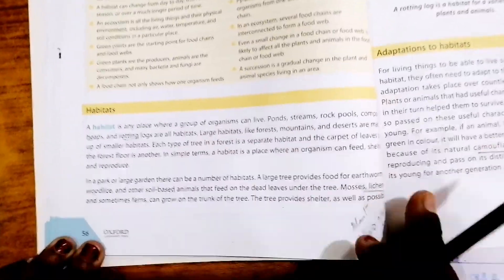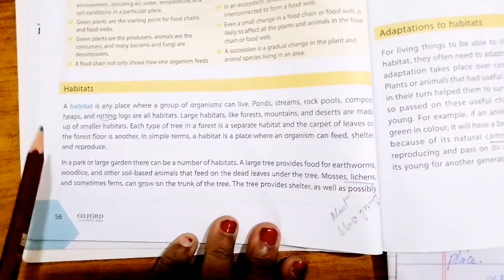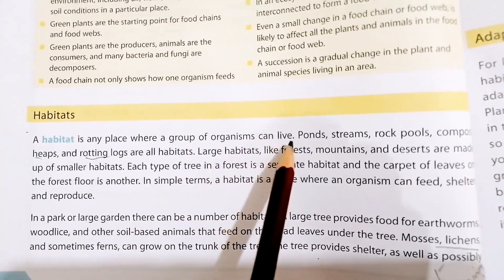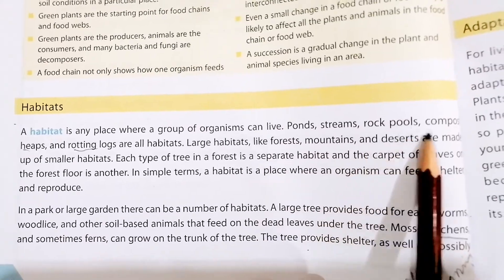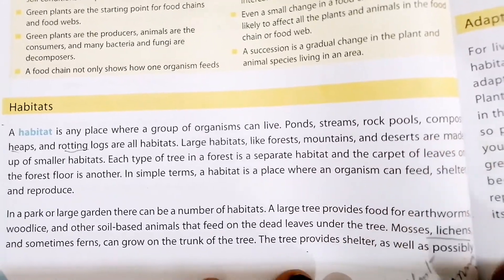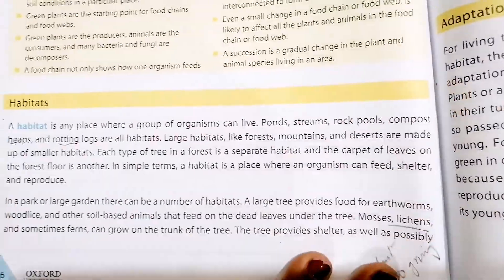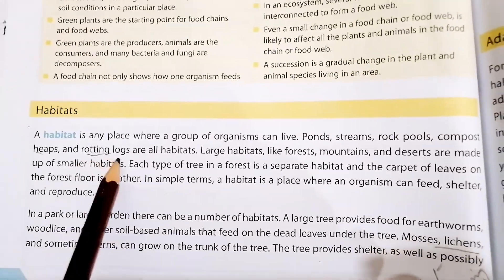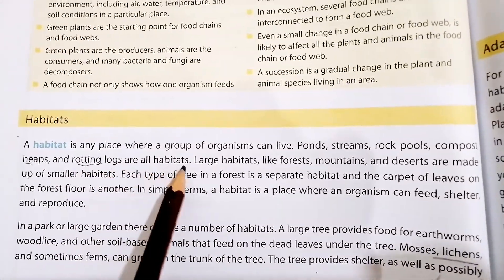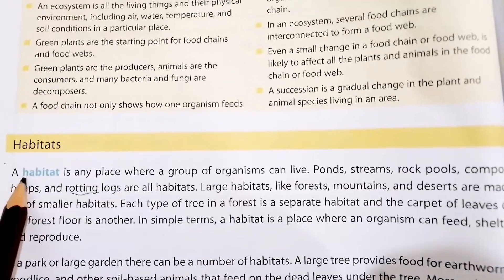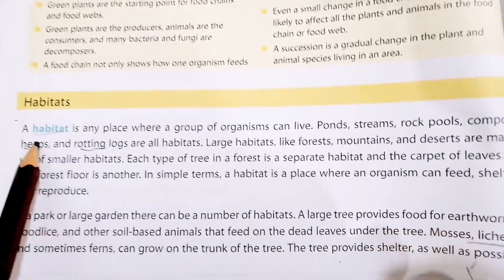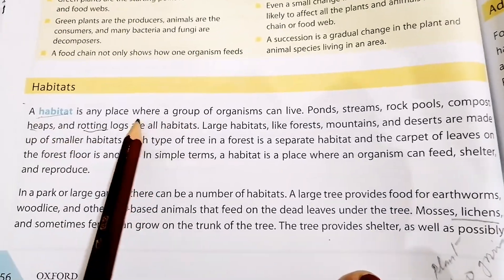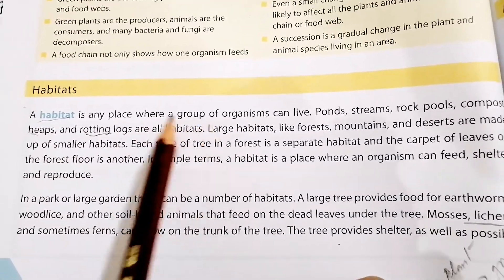A habitat is a place where a group of organisms can live. Pond, stream, rock pools, and compost heaps or rotting logs are examples of habitat. A habitat is a place where living organisms live for their survival.